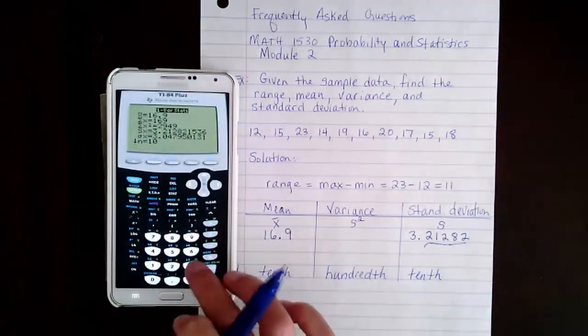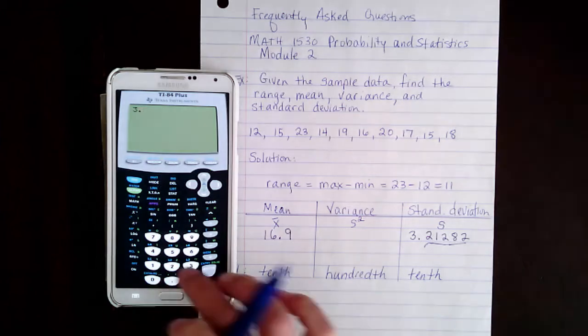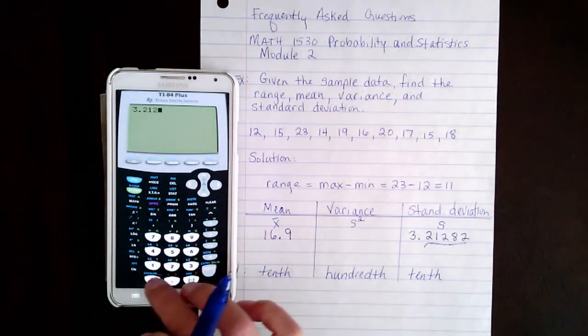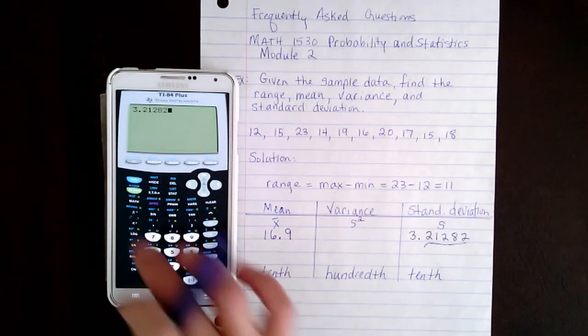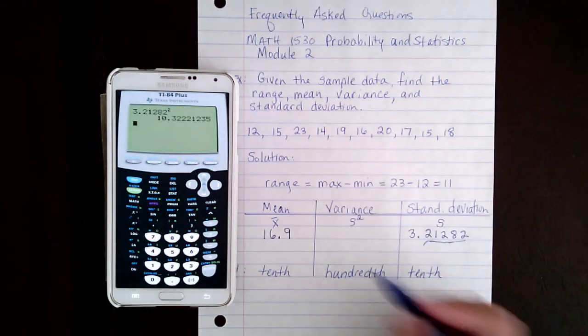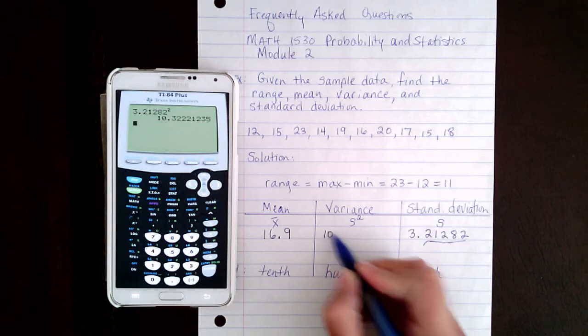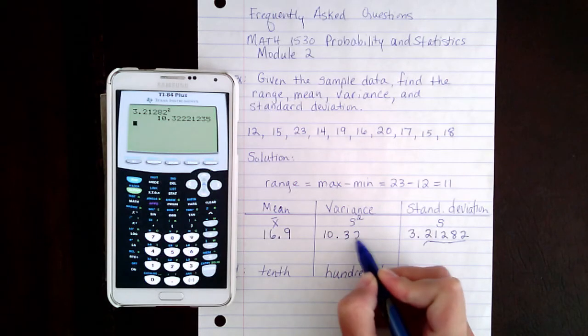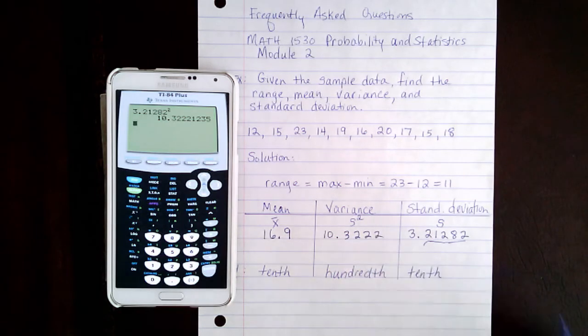So I'm going to go ahead and do 3.21282 squared and hit enter. And that's going to be the variance. So I'm going to do 10.3222 and so on.